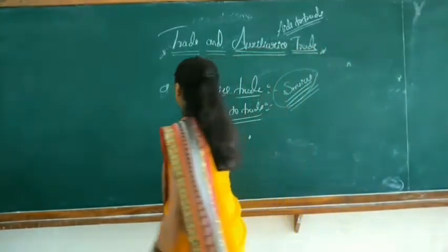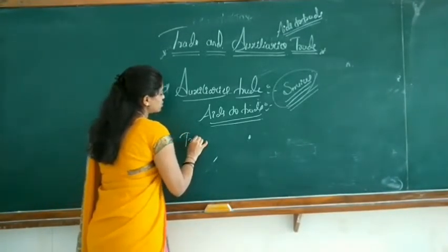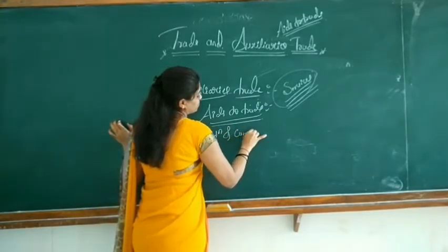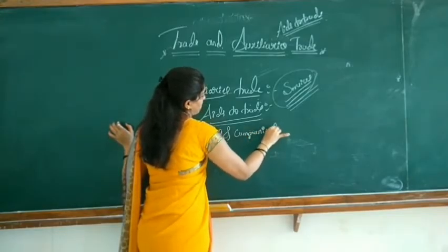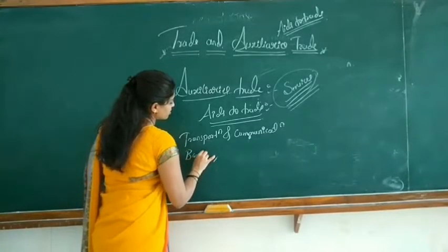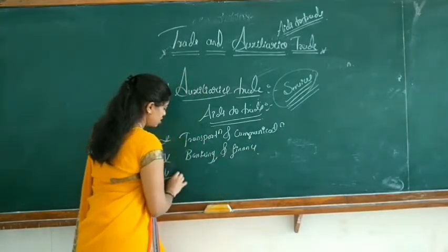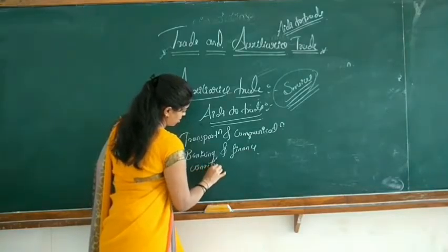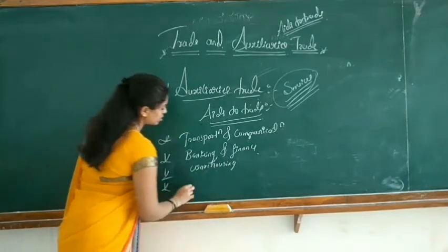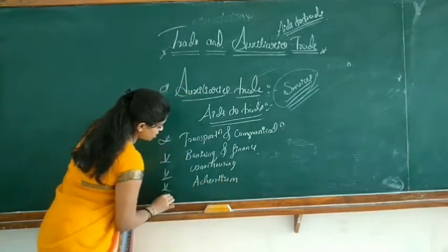What are the factors consisting of auxiliary to trade? The first factor is transportation and communication. The next one is banking and finance. The third one is advertising. The last one is insurance.